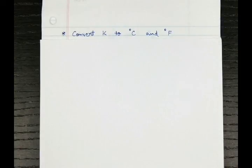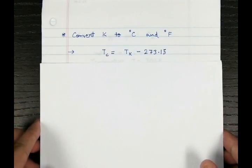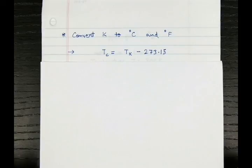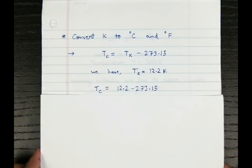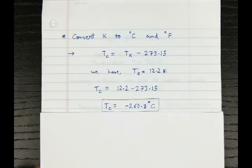Next we will convert the temperature into degrees Celsius and Fahrenheit. For Celsius and Kelvin, we have the relation that temperature in Celsius equals temperature in Kelvin minus 273.15. We have our temperature as 12.2 kelvins. We plug in the values and get that 12.2 kelvins equals minus 260.8 degrees Celsius.